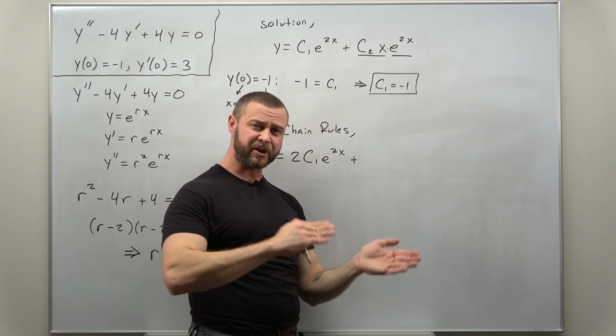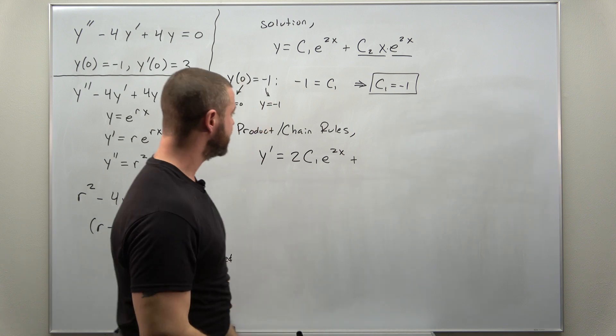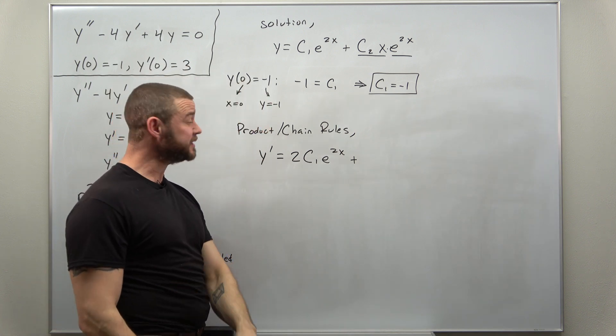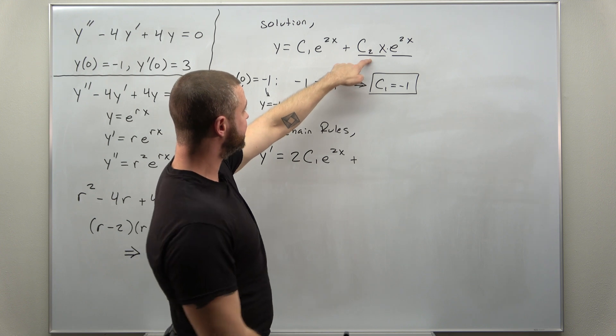From the product rule we'll call c2x the f and the e to the 2x the g. If you remember the product rule in terms of f and g, let's go ahead and calculate that. I always take my time.